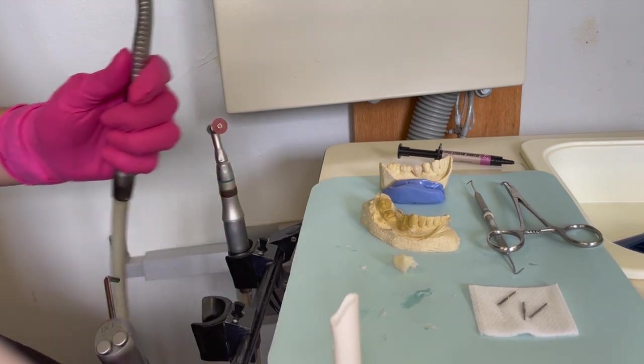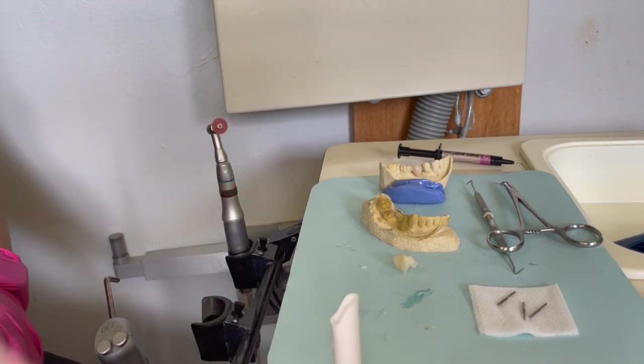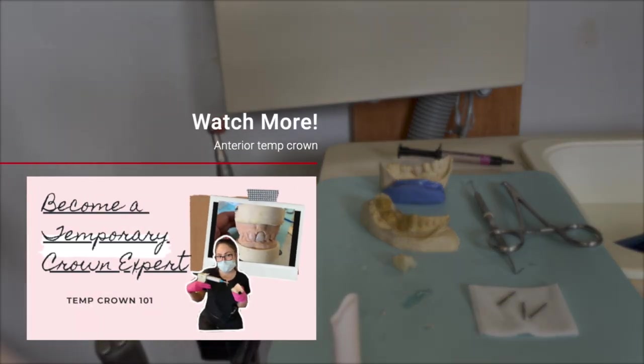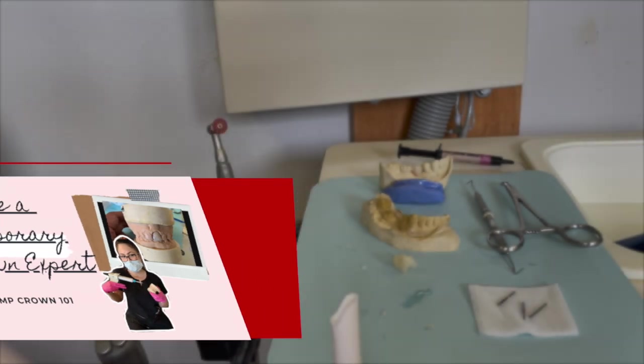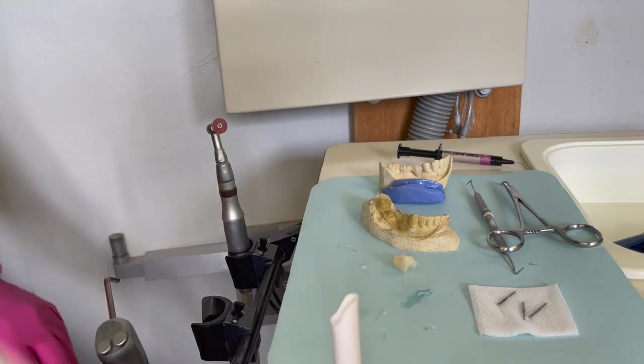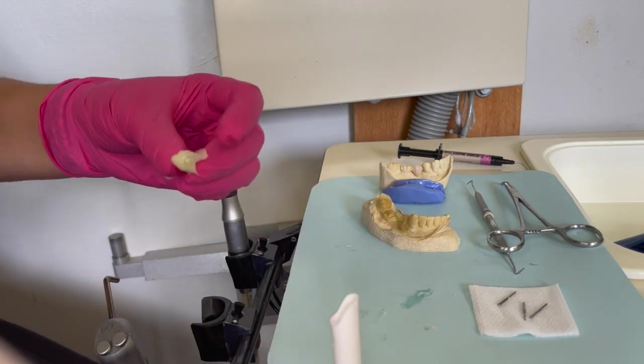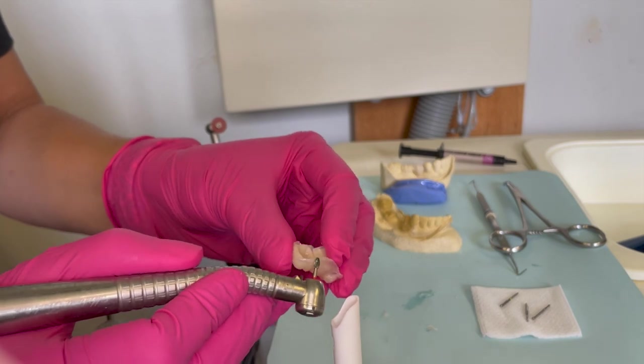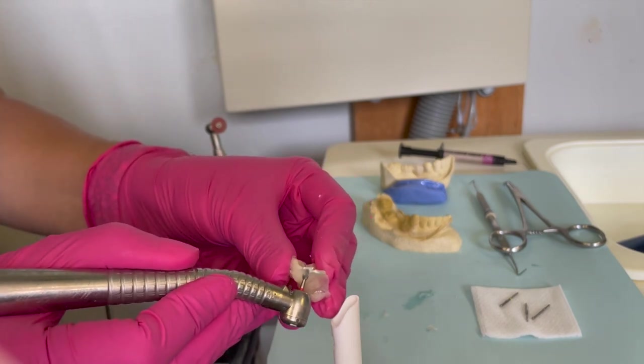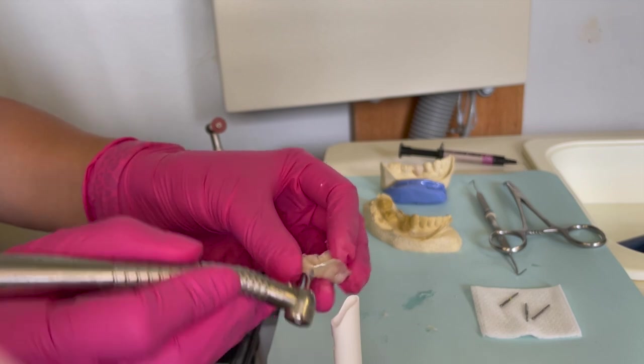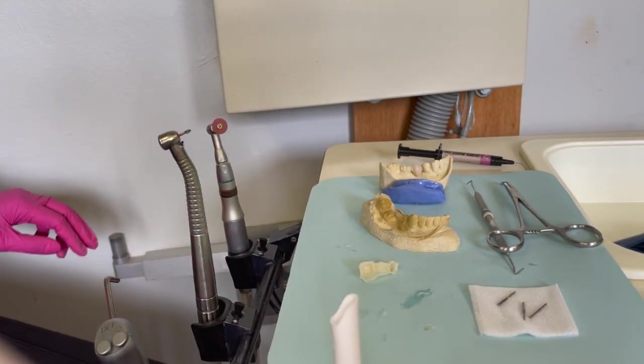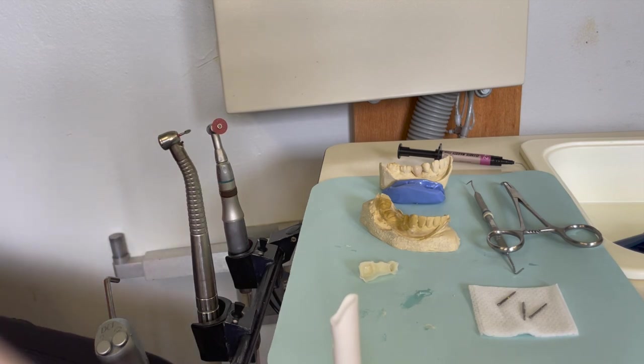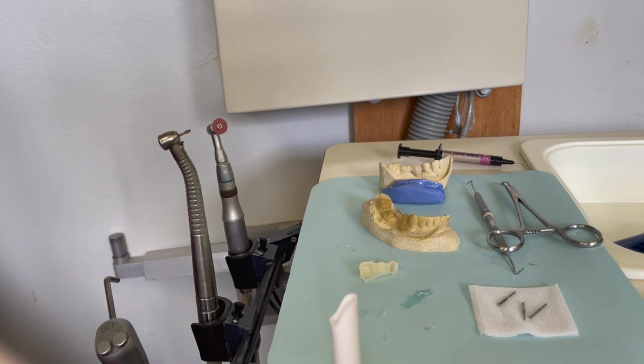A while back, Gabby made a video on how to fabricate an anterior temporary crown, and I highly recommend that you check it out because she goes into step-by-step. I'm not gonna be so detailed in this video because the same things she talked about apply to every type of temporary that you fabricate. All the basic rules apply to this temporary bridge, so check it out.